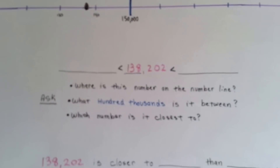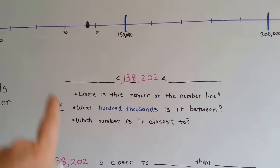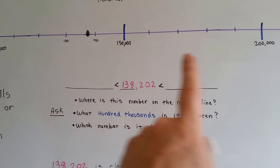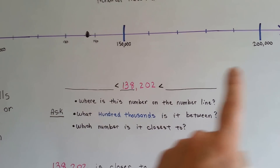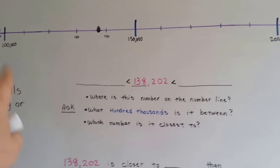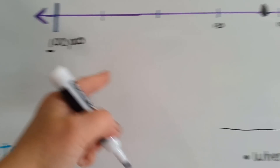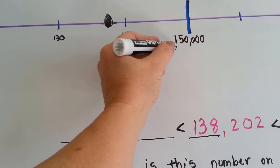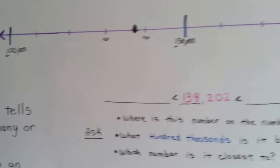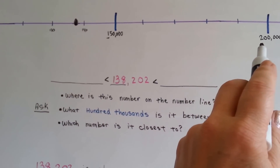Keep that black dot in mind. Where is this number on the number line? About right there, right? What 100,000s is it between? It's in between 100,000 and 200,000. You don't want to say 150 because that's not a 100,000 — that 5 is not in that place. That's still 100,000.